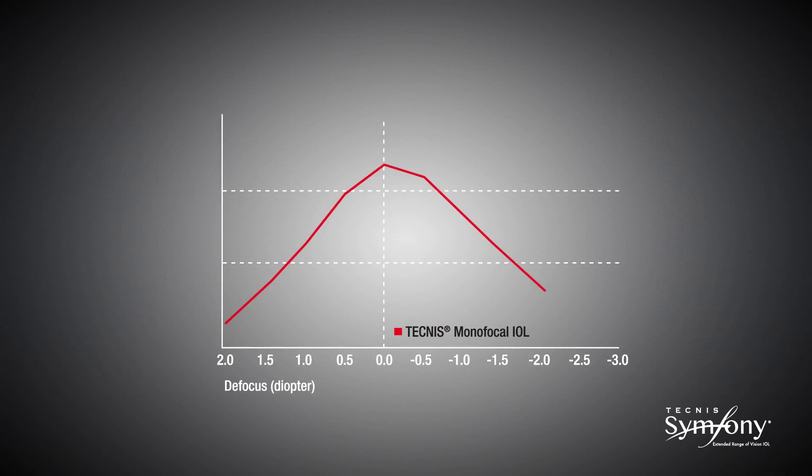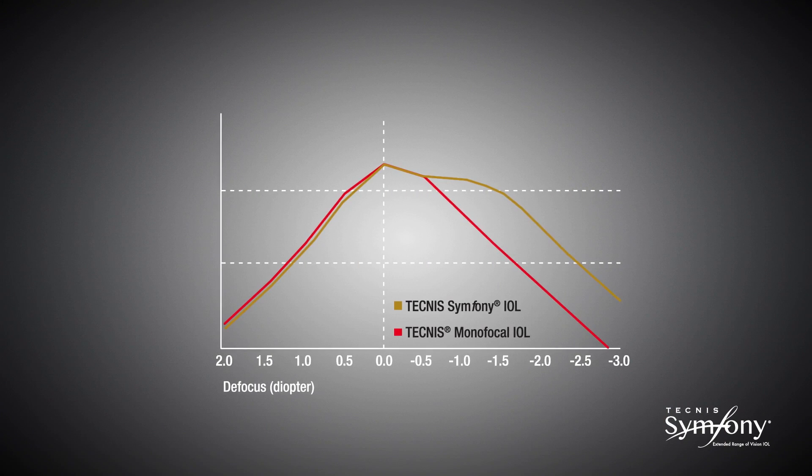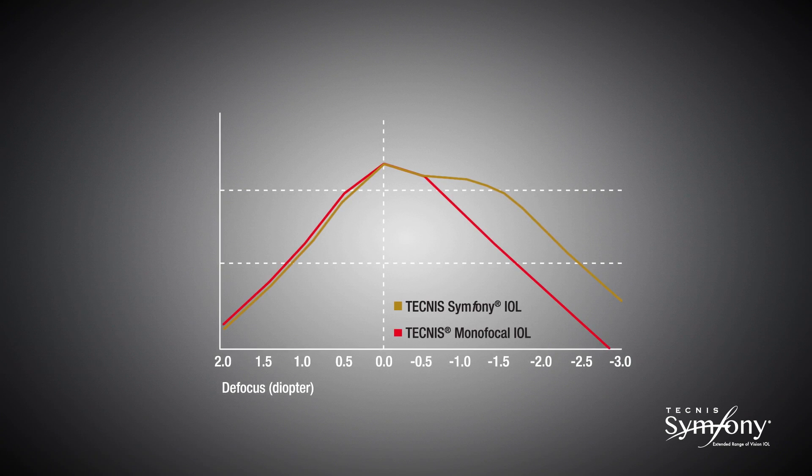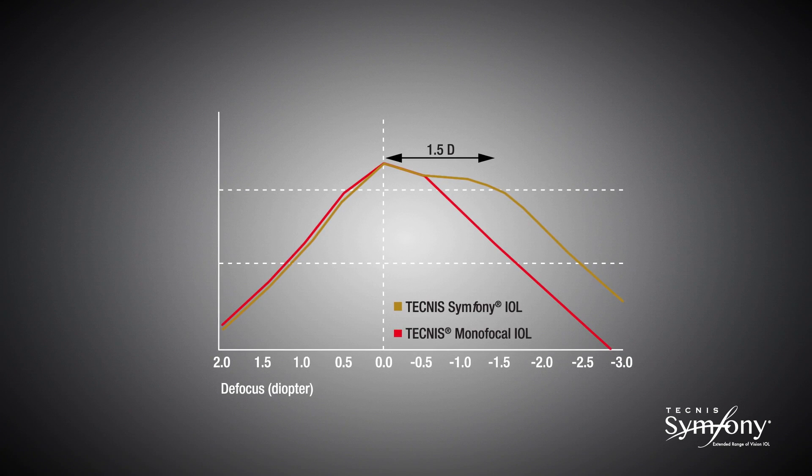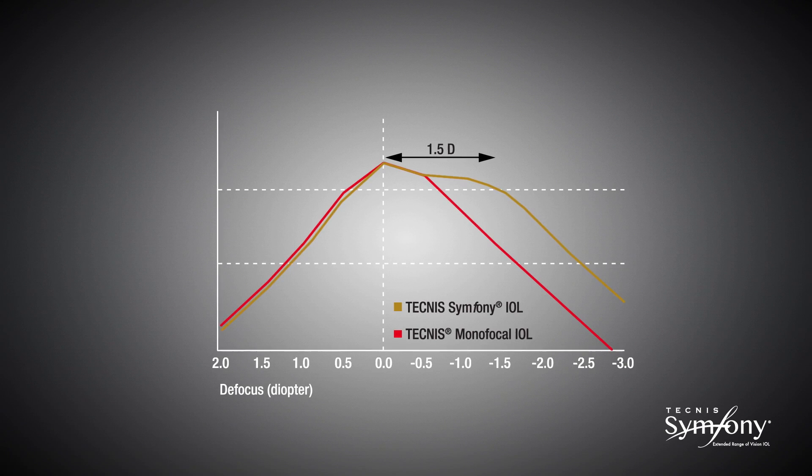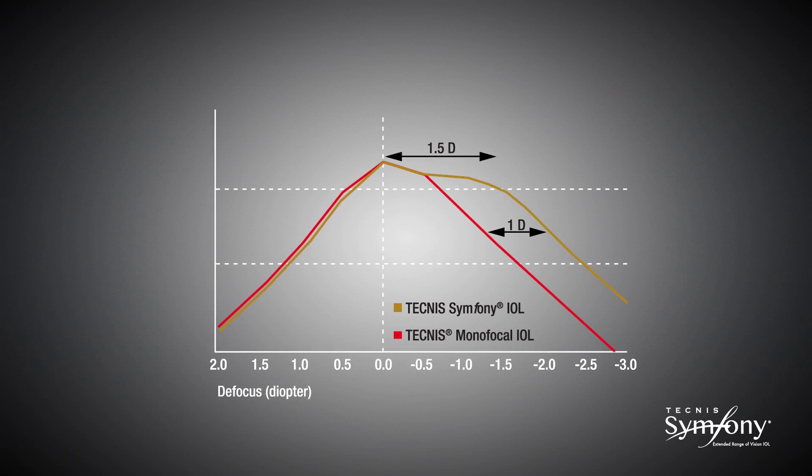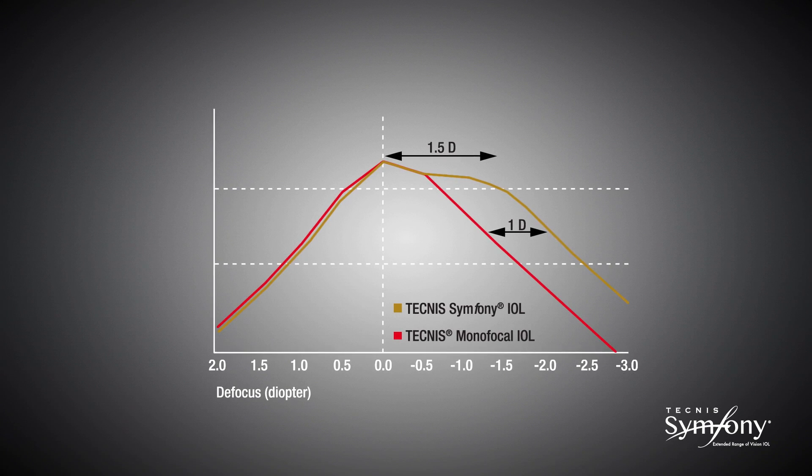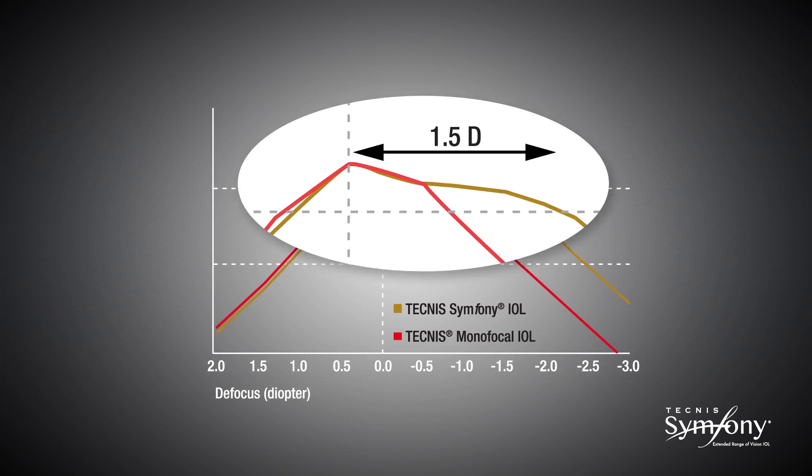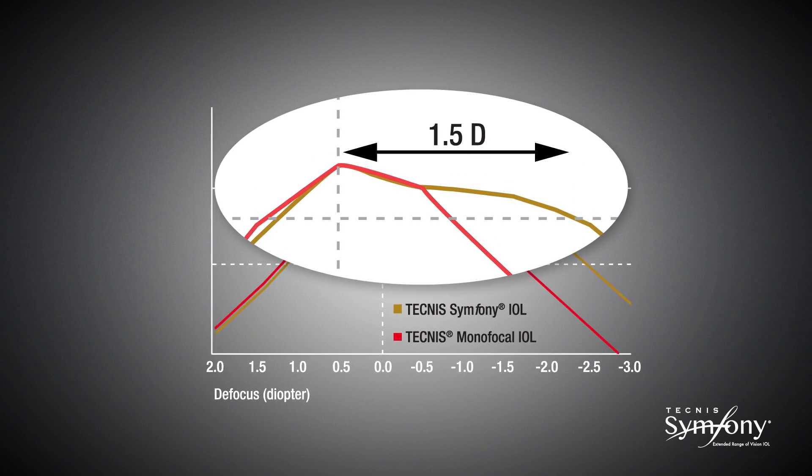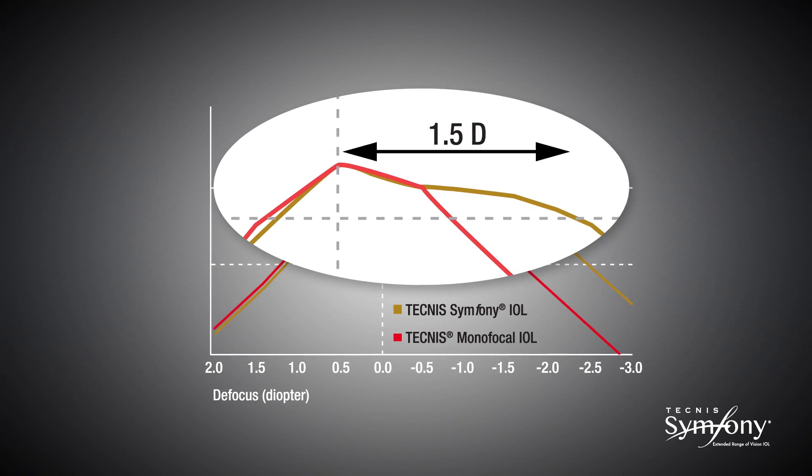Because of its elongated focus, the Tecnis Symphony IOL delivers high quality vision through 1.5 diopters of defocus and an increase of 1 diopter range of vision throughout the defocus curve compared to a monofocal IOL. The plateau of the defocus curve demonstrates the extended range of vision of the Tecnis Symphony lens.